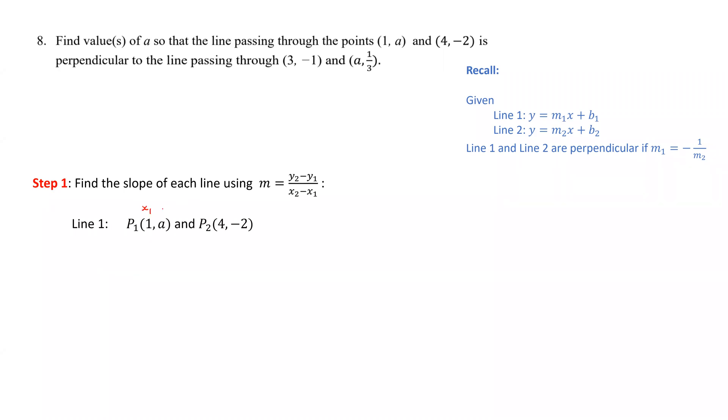Here, 1 is x1 and a is y1. P2 has coordinates (4, -2), which will be x2 and y2. Now we substitute the coordinates into the slope equation and get (-2 - a)/(4 - 1).